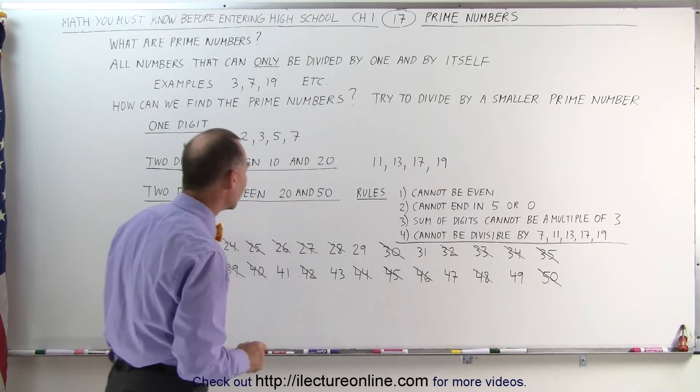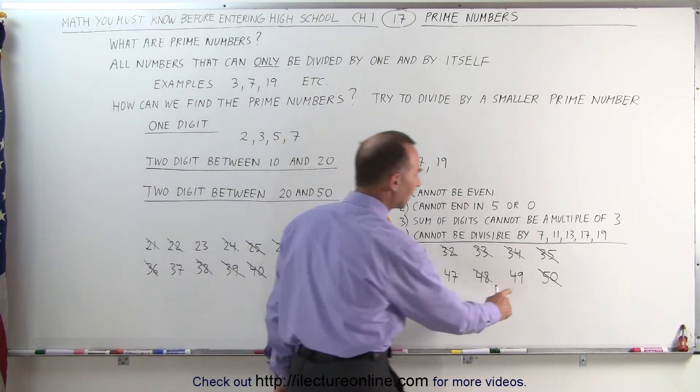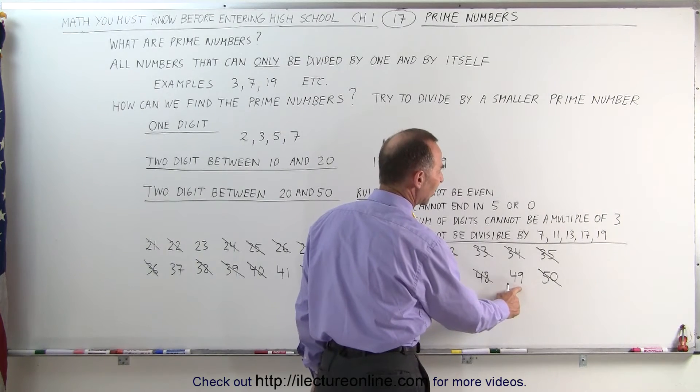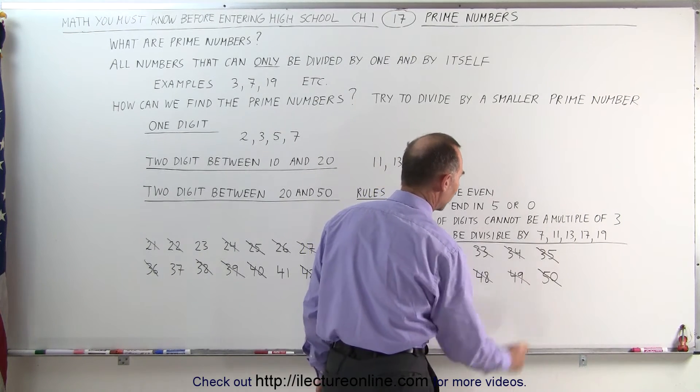Let's see if there's anything else we can get rid of. Well, first of all, we know that 49 is 7 squared, which means that can be divided by 7. That's not a prime number.